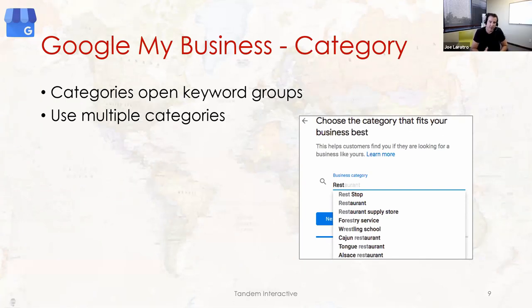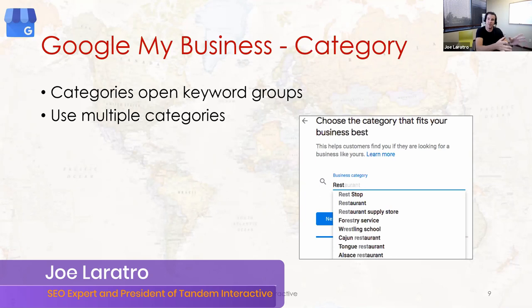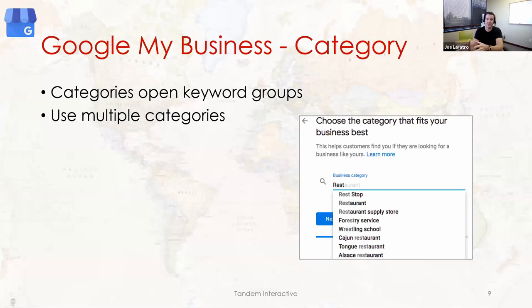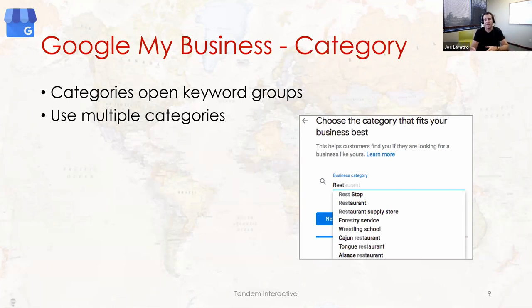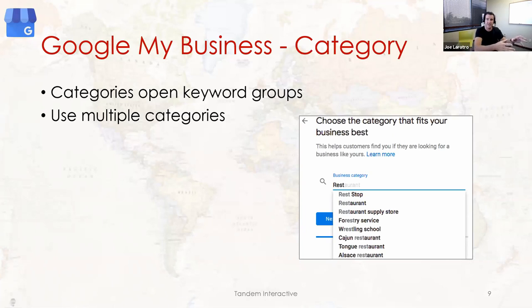Two important clarifications: paid search and organic search are completely separate — church and state within search engines. What happens on paid doesn't affect organic and vice versa. In the case where clients got hurt with zip code targeting, the zip codes were only being used because those are the service areas for specific locations — not for any predatory reason.